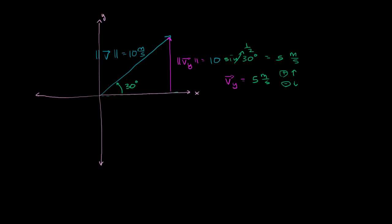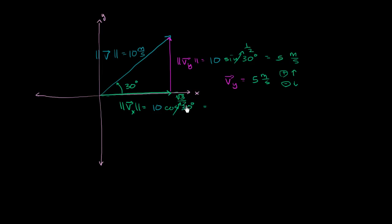We had the same issue when we talked about the horizontal vectors. The magnitude of this horizontal vector is going to be 10 cosine of 30 degrees, which comes straight out of basic trigonometry. Cosine of 30 degrees is √3 over 2, so multiplying by 10 gives us 5√3 meters per second.